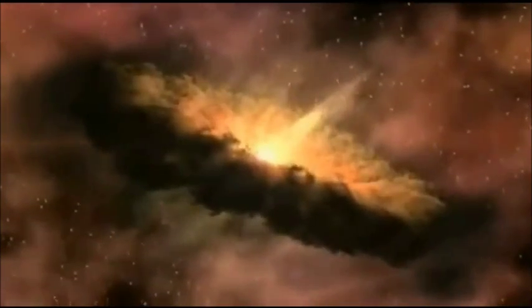Gravity coalesces the center of the disk into a sphere, where the heat rises to a scorching two million degrees. This glowing system is now known as a protostar.